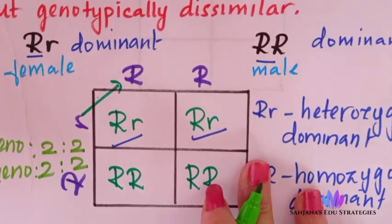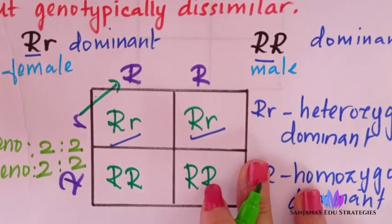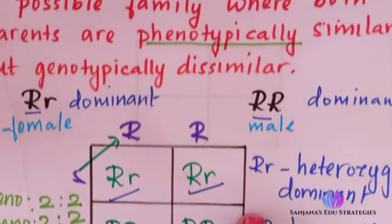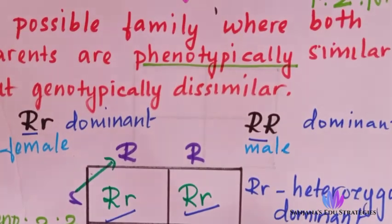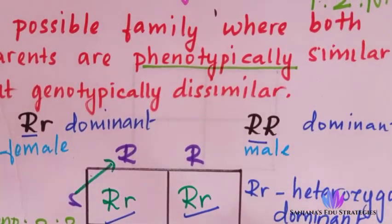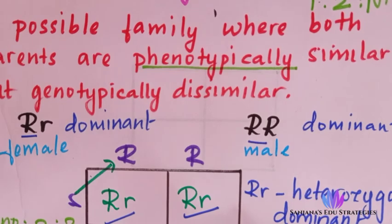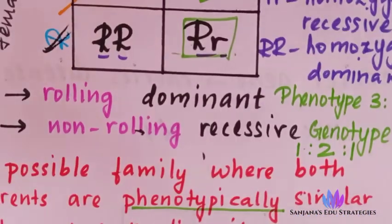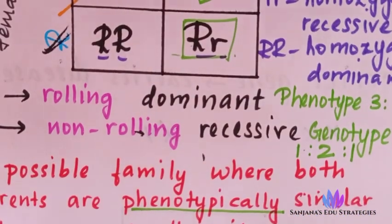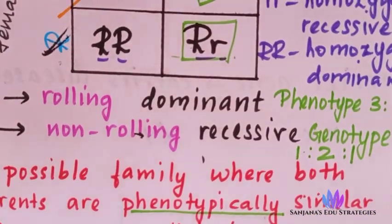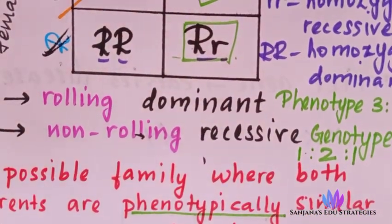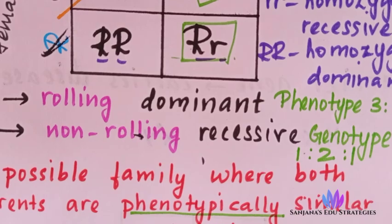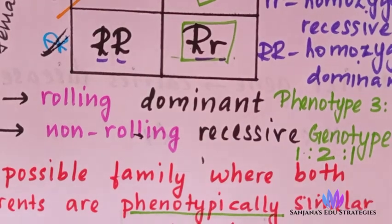So that is all under this topic — this is about how you find out the generation using a Punnett square.